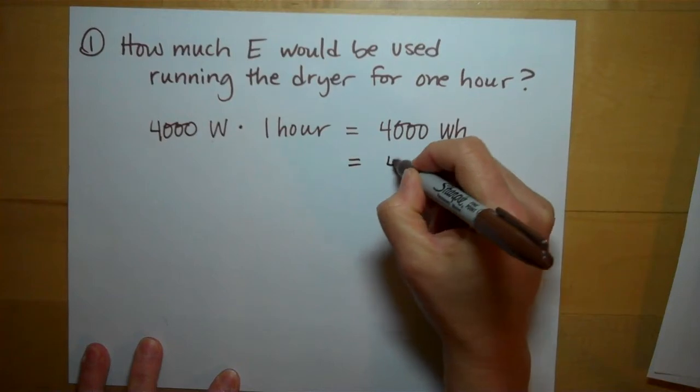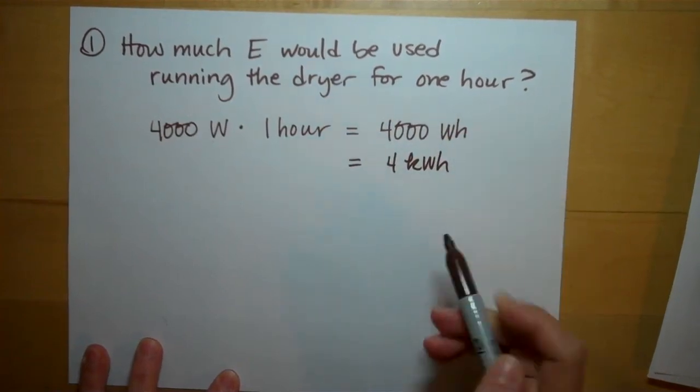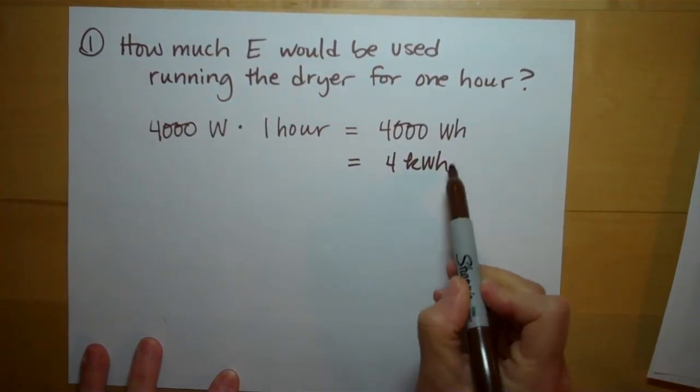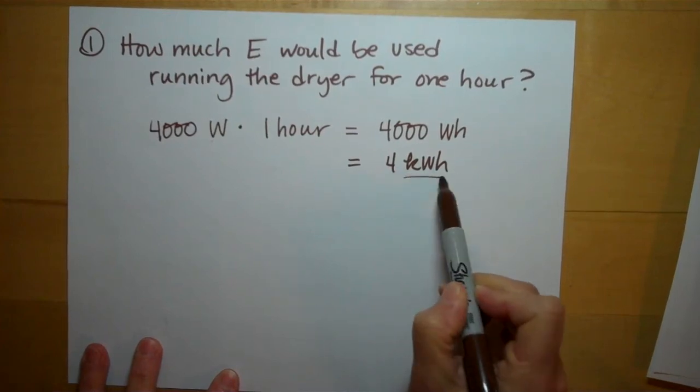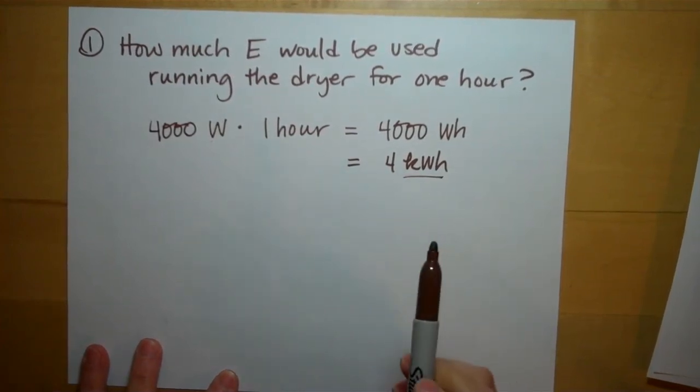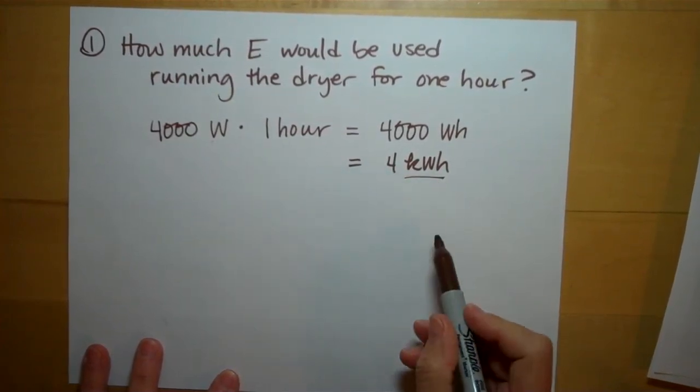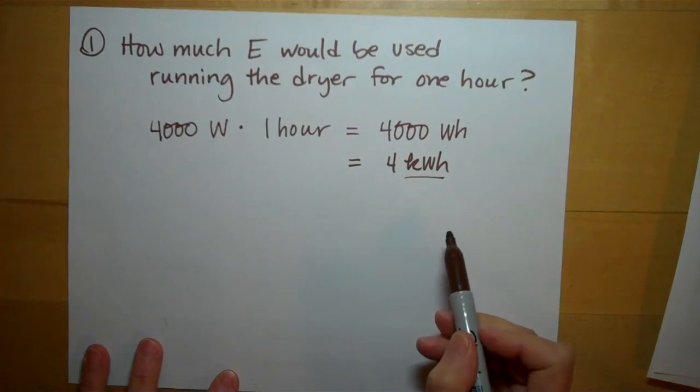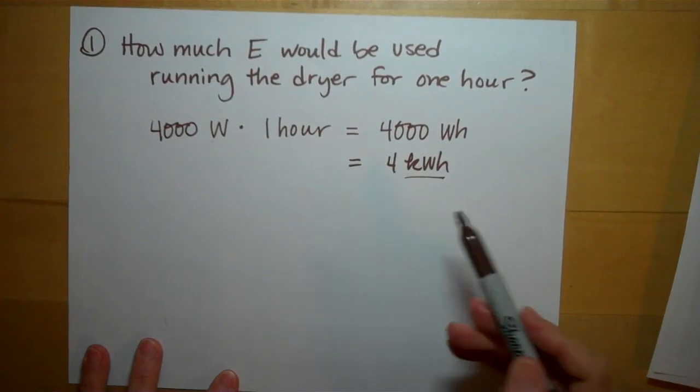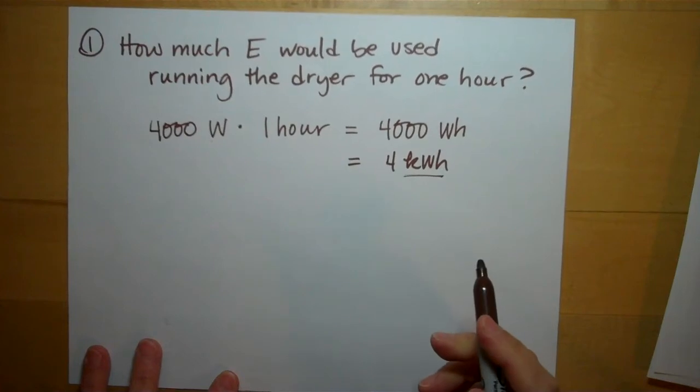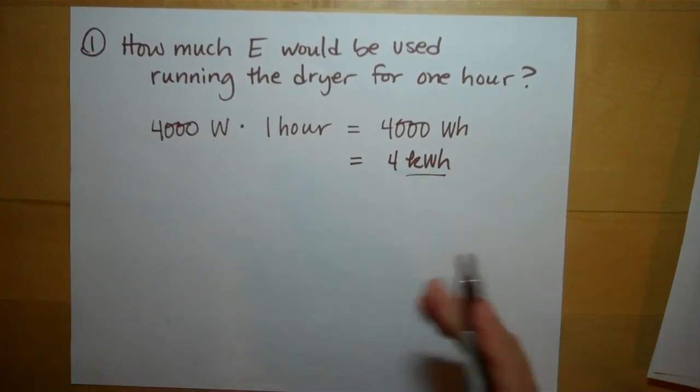If you want to simplify that to 4 kilowatt-hours, usually you're going to list your unit in kilowatt-hours. So running this dryer took 4 kilowatt-hours of energy, so 40 cents to run the thing. So save money, hang your clothes out to dry, or dry it less, use it half the time.